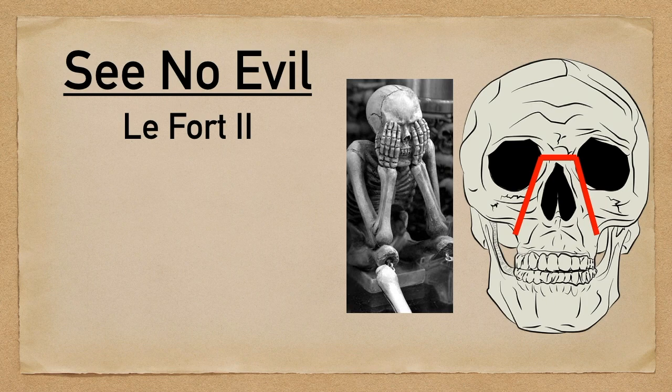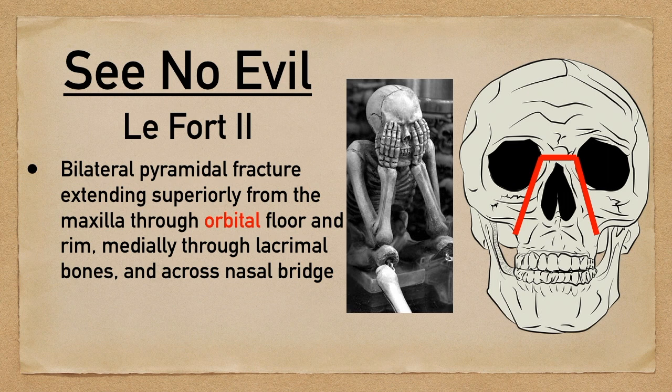The LeFort type 2 is a bilateral fracture that extends from the maxilla, travels superiorly through the orbital floor and rim, and then medially through the lacrimal bones and across the nasal bridge.